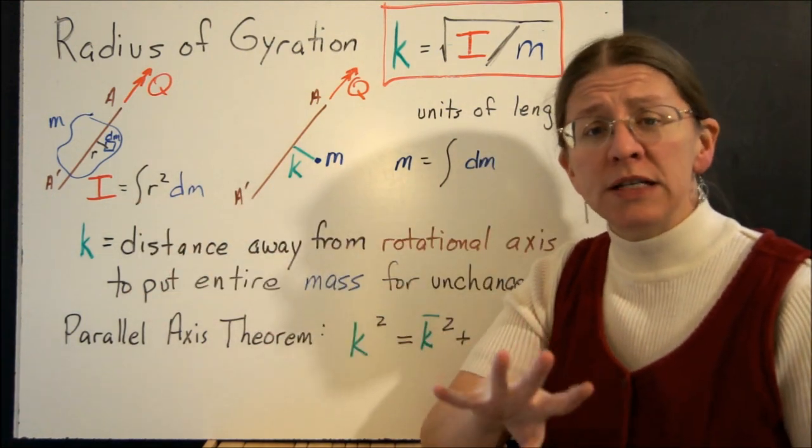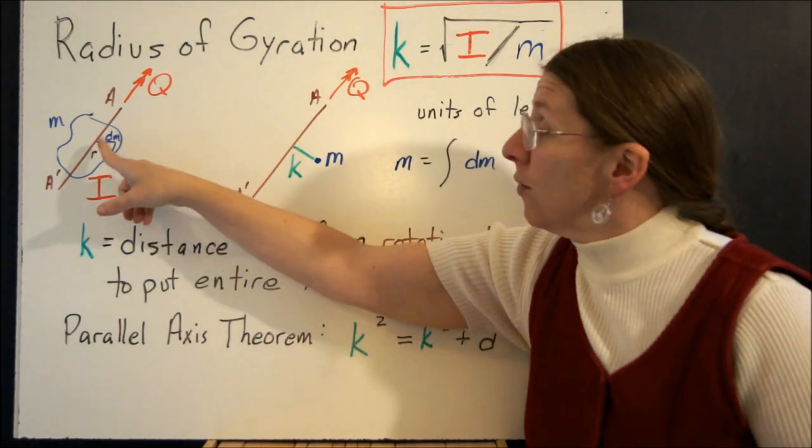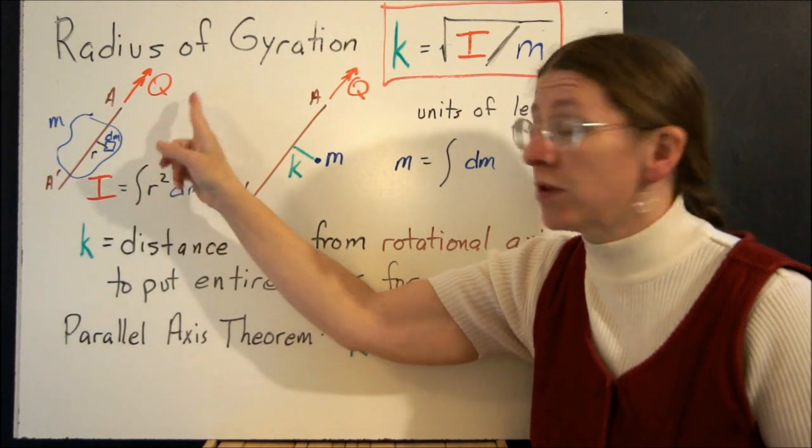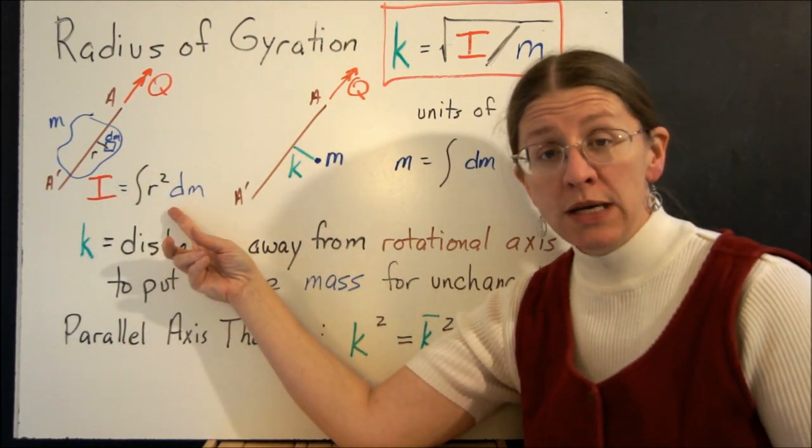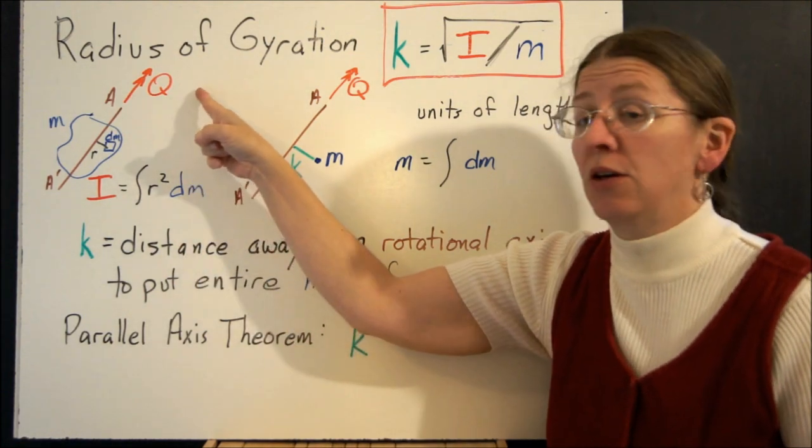A way to think about what a radius of gyration is: if you have the same picture we had before, where your mass, some potato looks like this, and you have an axis with a torque on it. I is the integral of r² dm. This is the resistance to the angular acceleration caused by that torque.